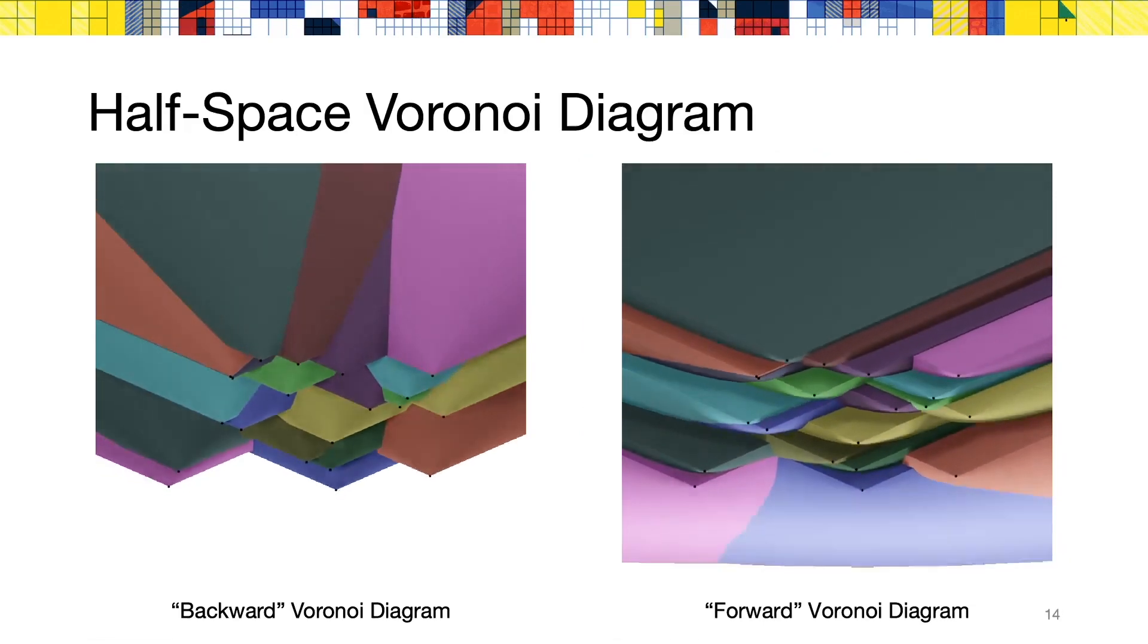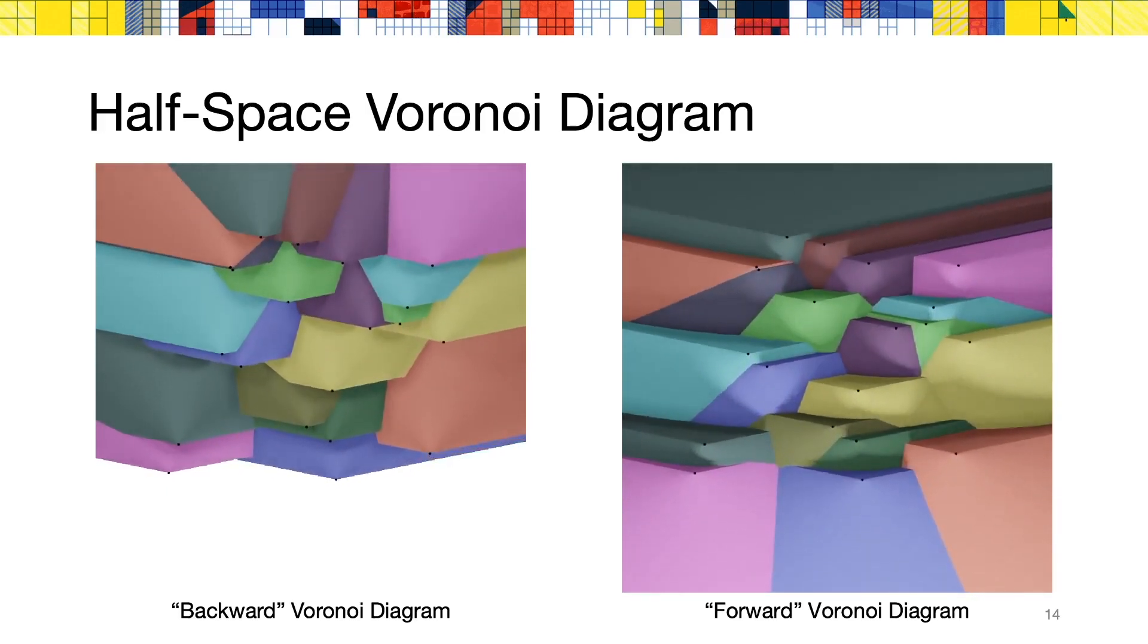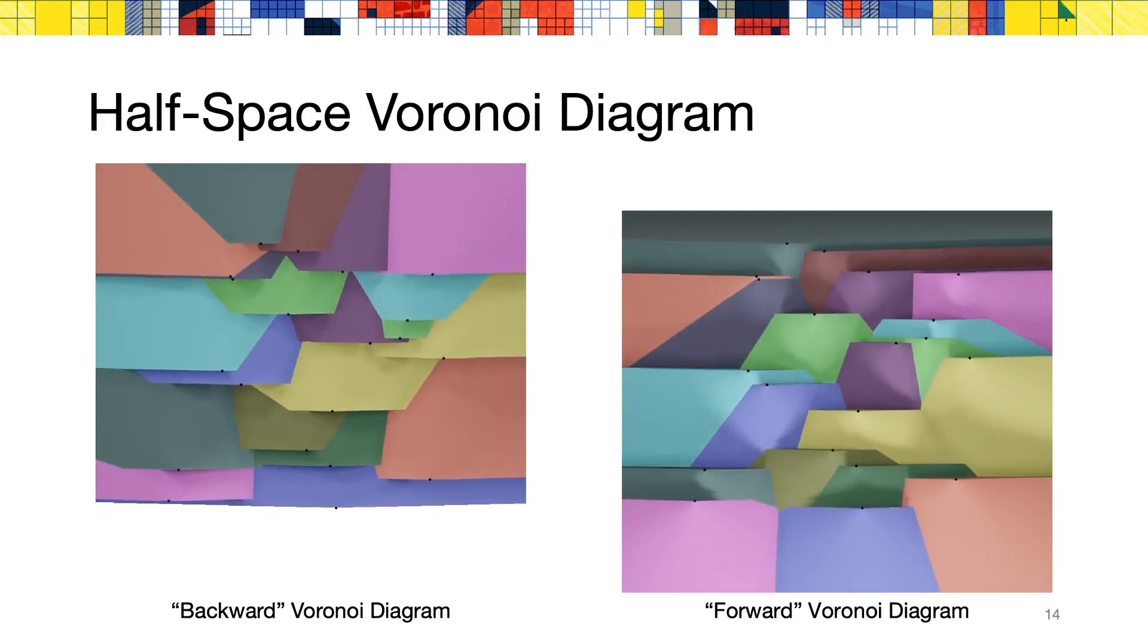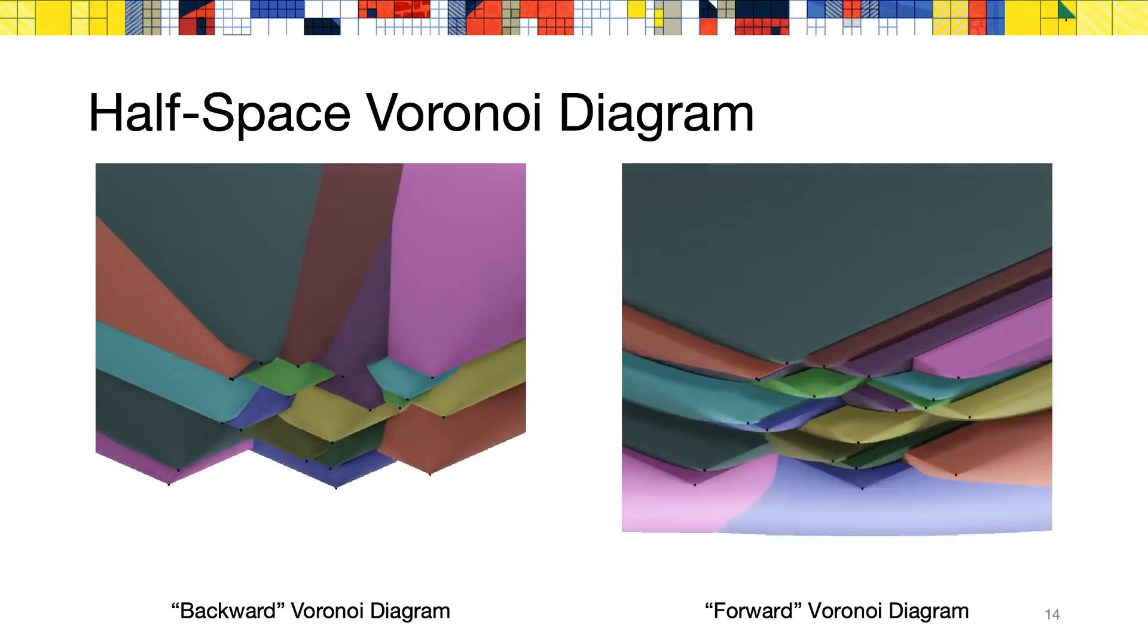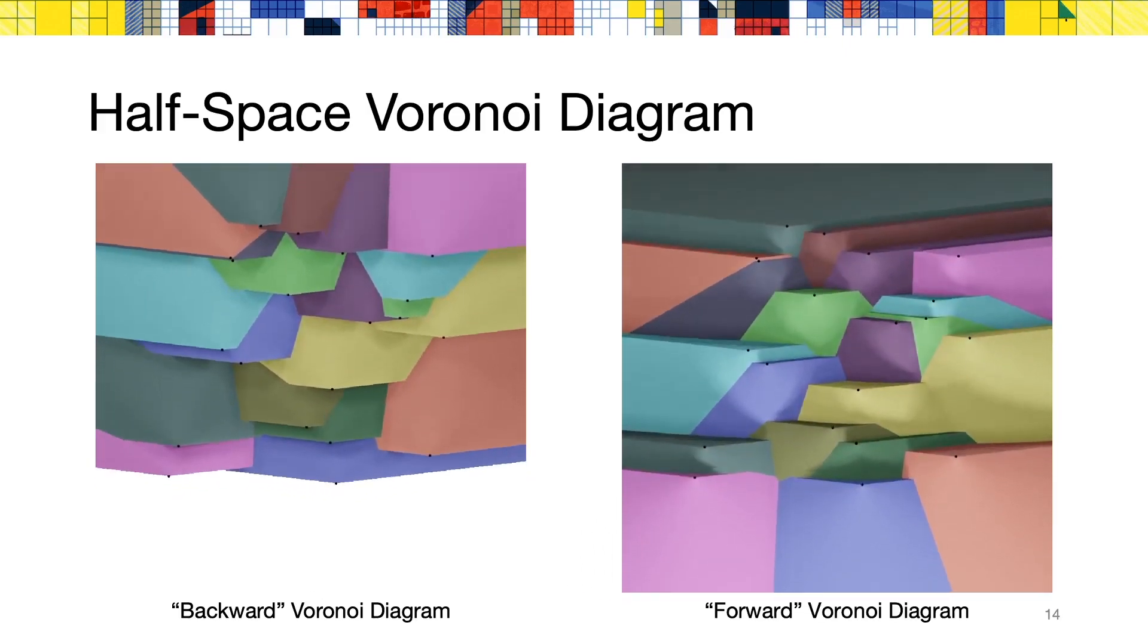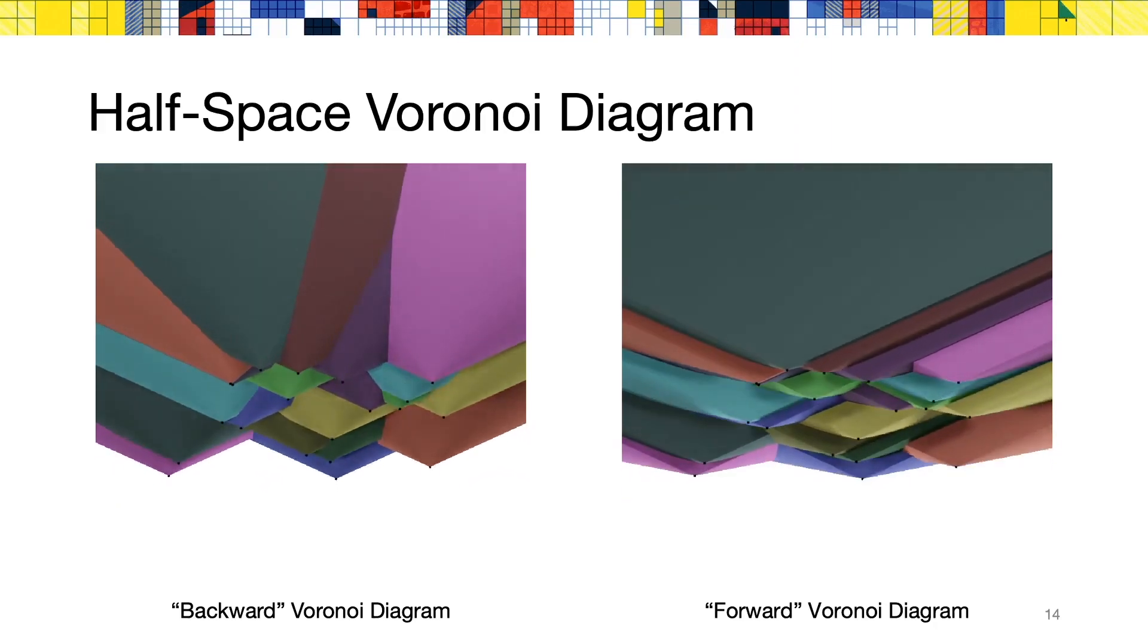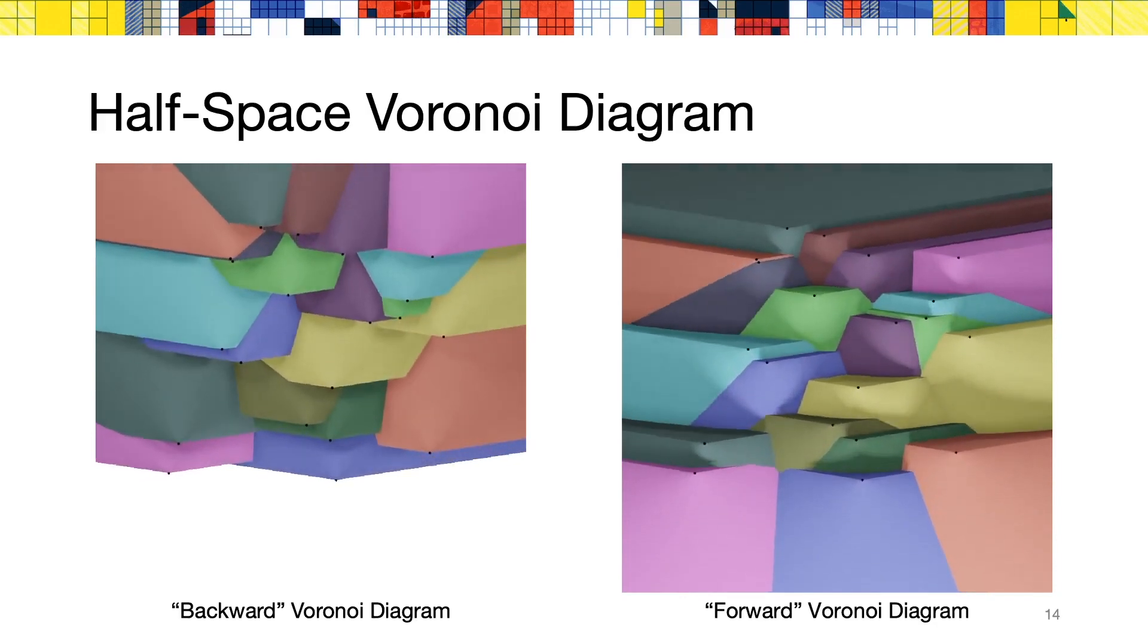Now, what happens if instead of a full cone, we use only half of a cone? Then we obtain what is called a half-space Voronoi diagram. Here you can see the backward and forward Voronoi diagram formed by our input seeds. The importance of this concept will become more clear later on, when I explain the details of our sweep line algorithm for surface offset.